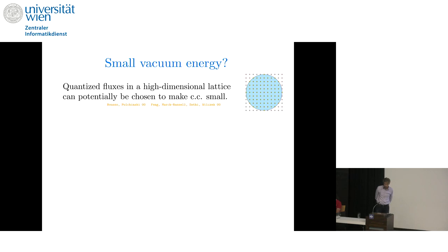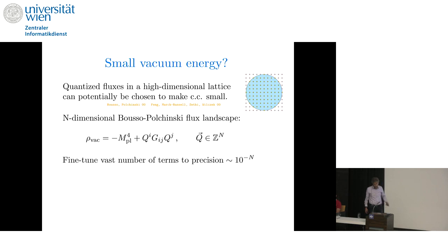But how are we going to get to small vacuum energy? The foundational idea in this approach is that quantized fluxes in a high-dimensional lattice might possibly be chosen to make the cosmological constant small. In an n-dimensional Bousso-Polchinski flux landscape, the potential energy function looks like minus a large constant plus an expression that's quadratic in the quantized fluxes stitched together by a metric. And the idea is that you could try to choose the fluxes so that you fine-tune a large number of terms here to precision exponential in the dimensionality and achieve a small cc.